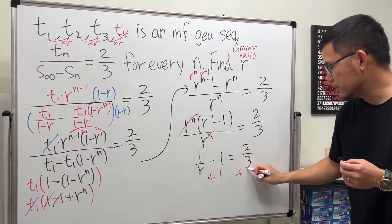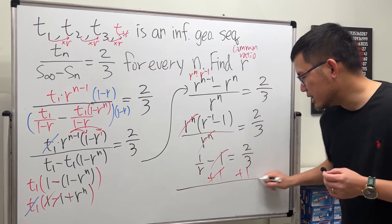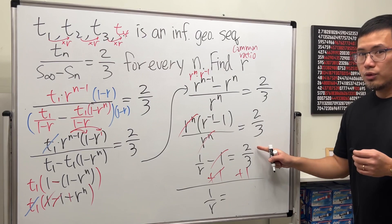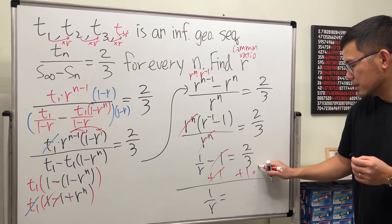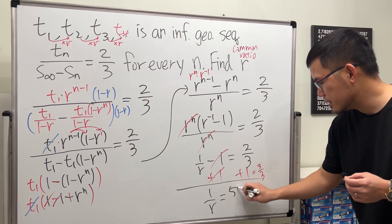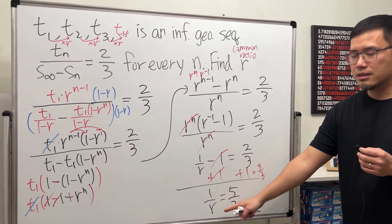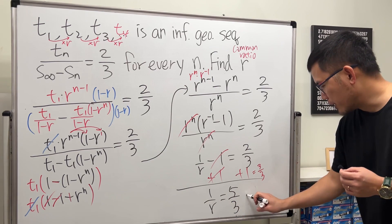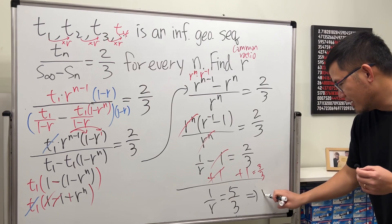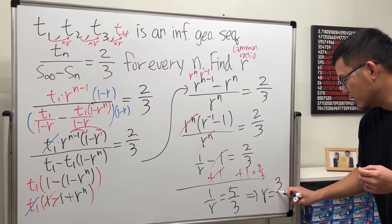r to the negative 1 is the same as 1 over r minus 1 equals 2 third. And then, of course, just go ahead and finish this. Add 1 to both sides. Then, we get 1 over r equals 2 over 3 plus 1. 1 is the same as 3 over 3. So we get 5 over 3. But, this is not r. This is 1 over r. So from here, we just do the reciprocal of both sides. So finally, r equals 3 over 5.